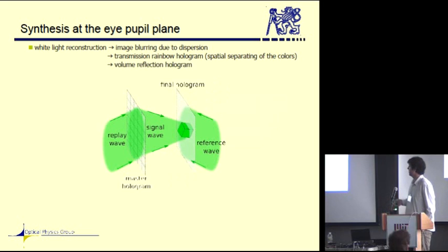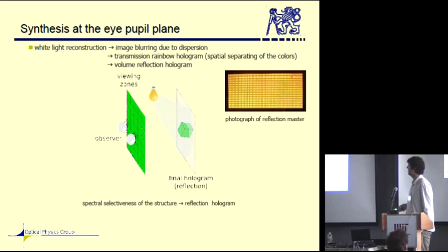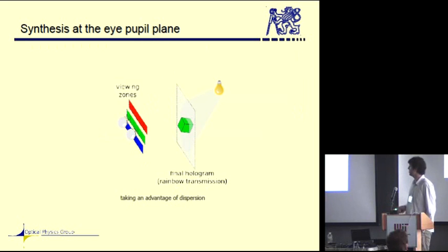The other way is making a reflection hologram, which is spectrally selective and just chooses a narrow band of spectra, and the image is seen undistorted. This is a photograph of such a master we created. As I was speaking about dispersion, we can also take advantage of it. We use it for color mixing.